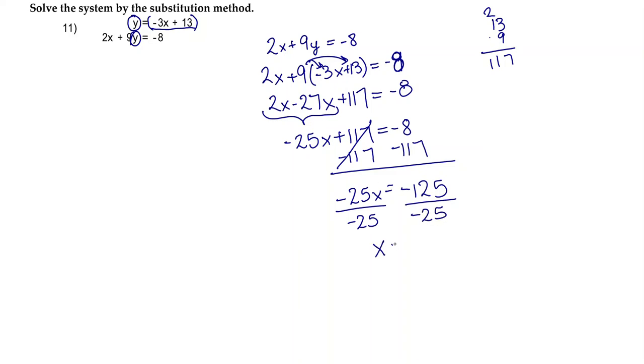So now I have x by itself, and it is equal to negative 125 over negative 25. But I'm going to go ahead and simplify that. So negative 125 over negative 25 simplifies to 5.